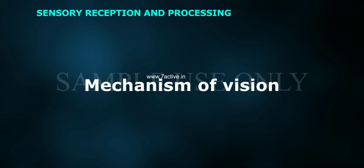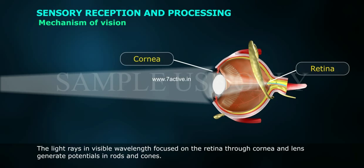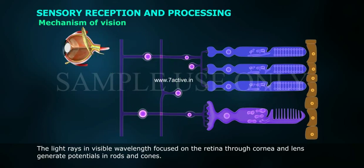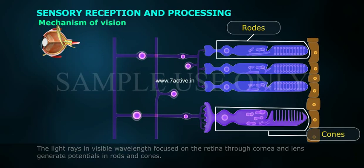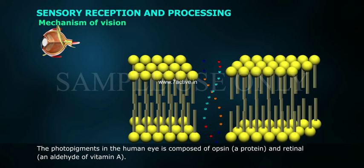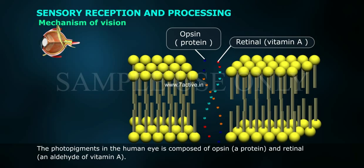The mechanism of vision: light rays in the visible wavelength, focused on the retina through the cornea and lens, generate potentials in the rods and cones. The photopigments in the human eye are composed of opsin, a protein, and retinal, an aldehyde of vitamin A.